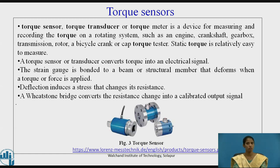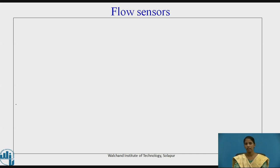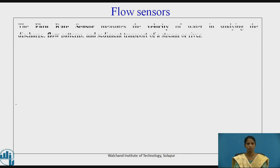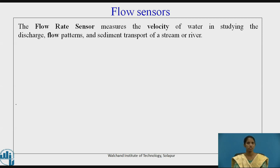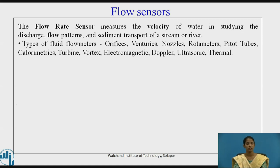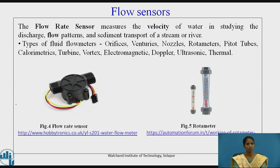The next type of sensor is the flow sensor. The flow rate sensor measures the velocity of water in studying the discharge, flow patterns, and sediment transport of a stream or river. The types of fluid flow meters include orifice, venturi, nozzles, rotameters, pitot tubes, calorimetric, turbine, vortex, electromagnetic, Doppler, ultrasonic, and thermal. Figures 4 and 5 show the flow rate sensor and rotameter, which are used to measure flow rate.